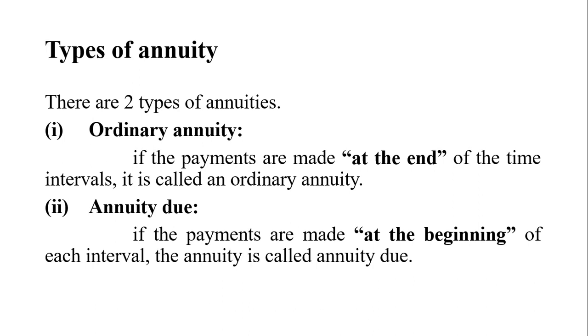Annuity due: if the payments are made at the beginning of each interval, then it is called annuity due. For example, if we receive salary at the very start of every month, that is annuity due. If we give at the start of the month, we have annuity due, and if we give at the end, we have ordinary annuity.